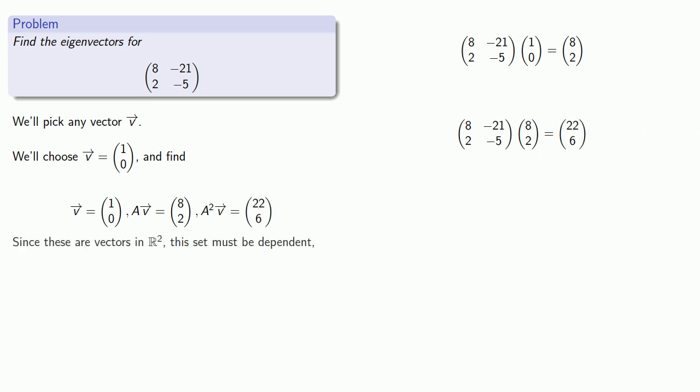Now since these are vectors in R², this set of three vectors must be dependent. And so let's take a look at that. Because they're dependent, there must be nonzero values x₁, x₂, x₃, where the linear combination of v, Av, and A²v is equal to 0.